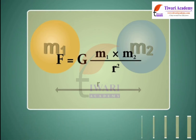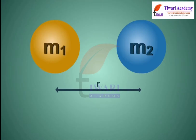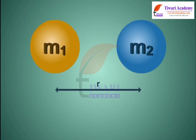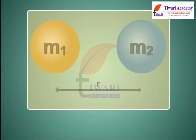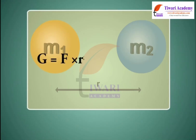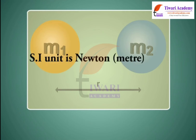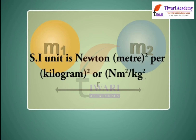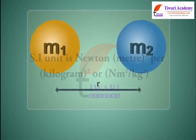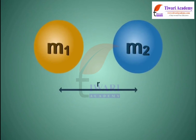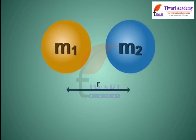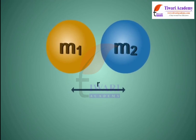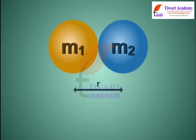The SI unit of force is Newton. For the gravitational constant G, we have G equal to F into R square upon M1 into M2. Its SI unit is Newton meter square per kilogram square, or Nm² per kg². The gravitational constant G is the force of gravitation which exists between two bodies of unit masses kept at a unit distance from each other.